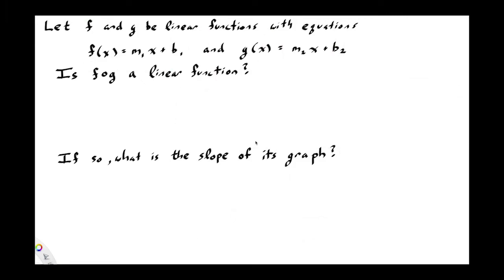Another question I've gotten frequently is about the first homework, problem number 27. The problem says: let f and g be linear functions with equations f(x) = m1*x + b1 and g(x) = m2*x + b2. Is f composed with g — read as f circle g — a linear function?